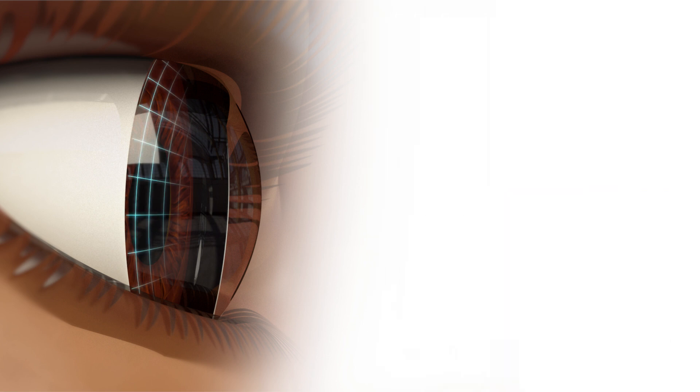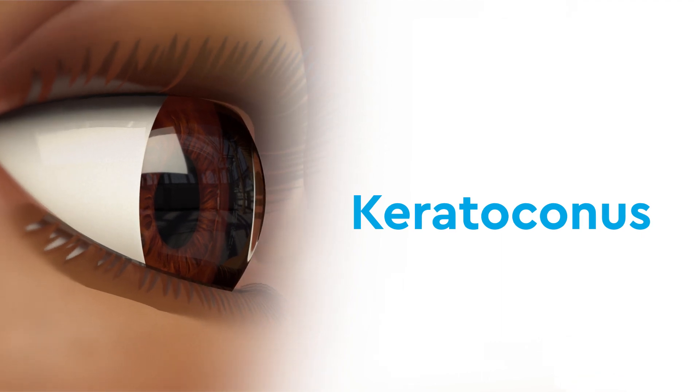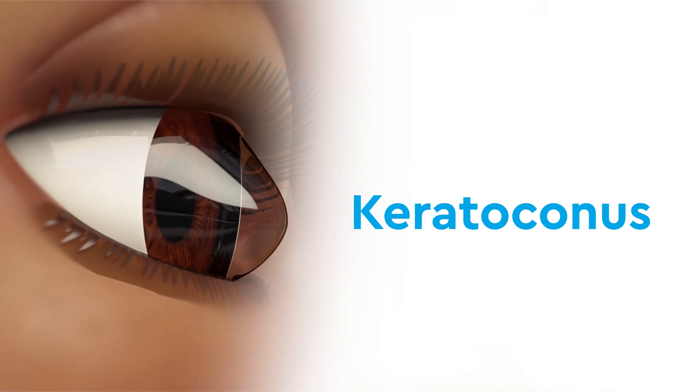The cornea is supposed to have a round shape, but keratoconus is a disease in which the cornea becomes progressively cone-shaped.